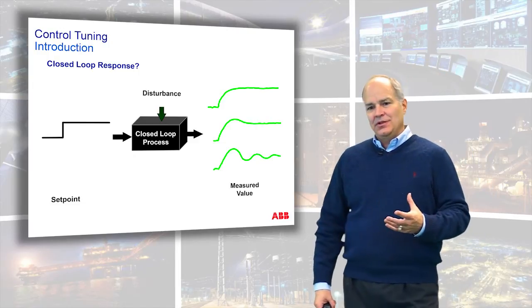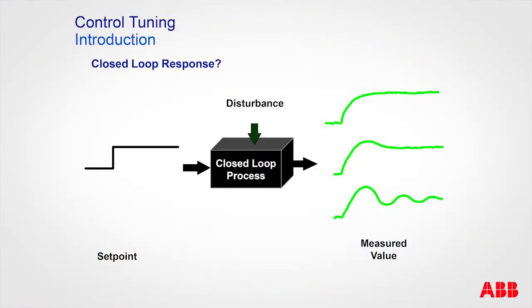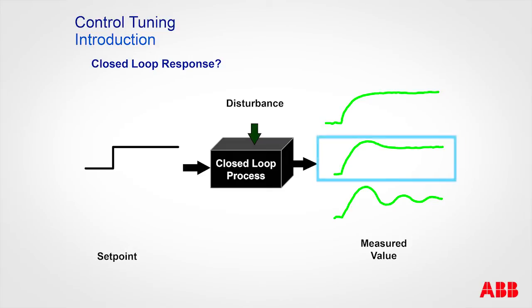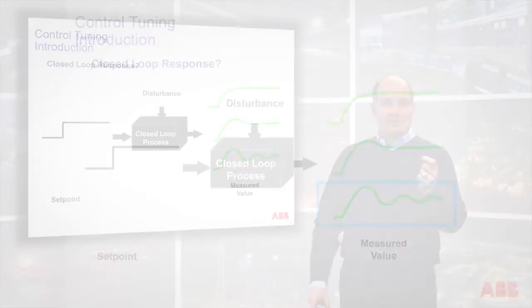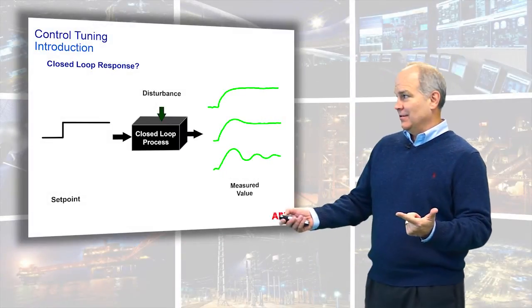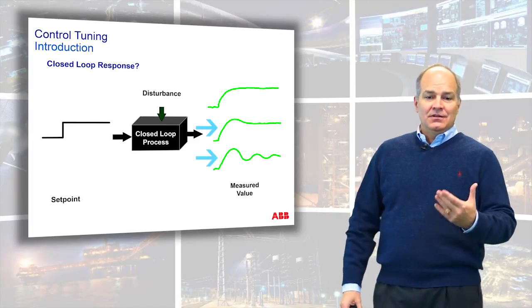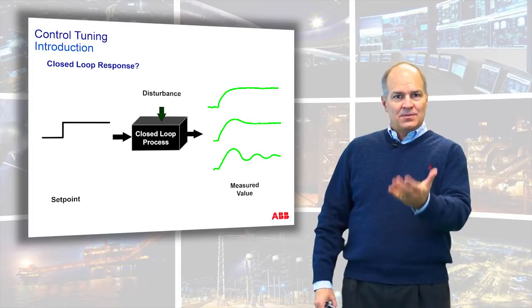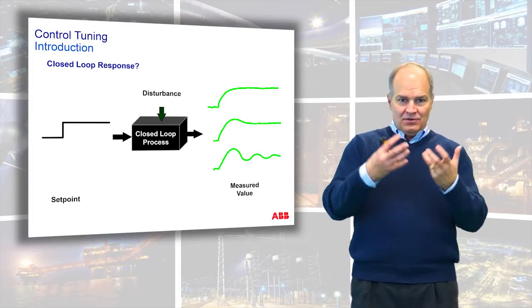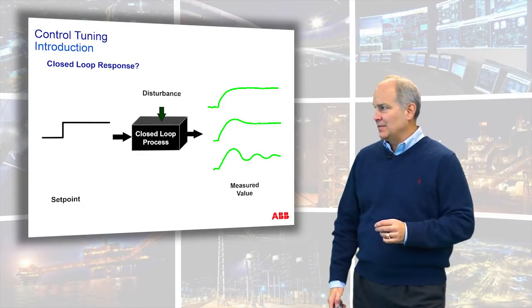What's awesome about control tuning is that you get to define how the loop responds. You can make it respond in a nice smooth transition, do a little overshoot, or make it oscillate — simply by changing the parameters of proportional and integral. You can take a signal that responds one way and convert it to something else. You have to know where you want to go, and then with the process you make what you want by adjusting the tuning parameters.